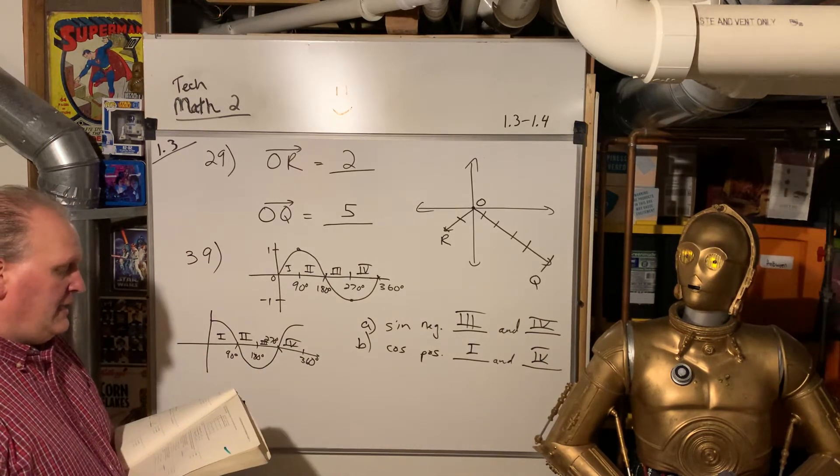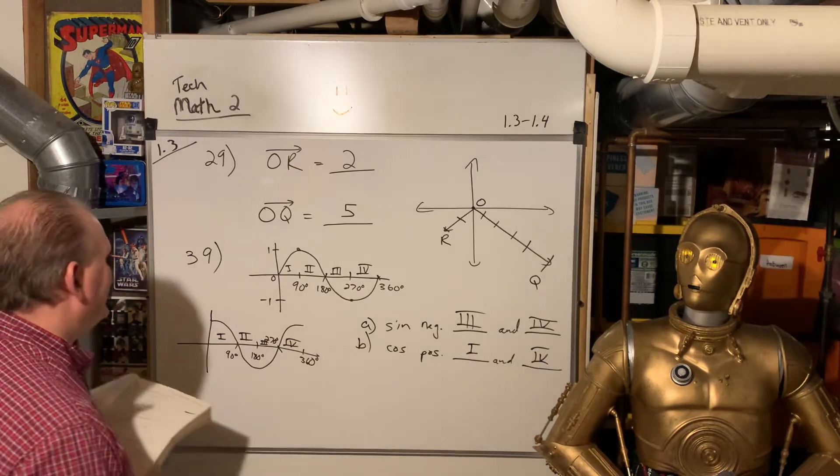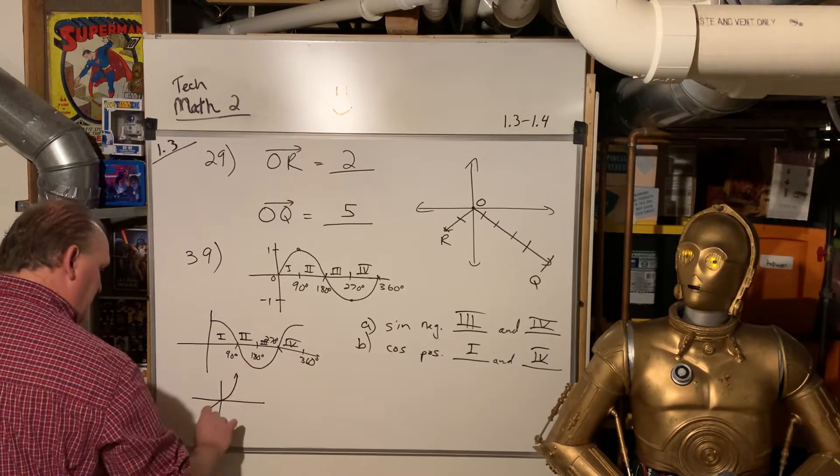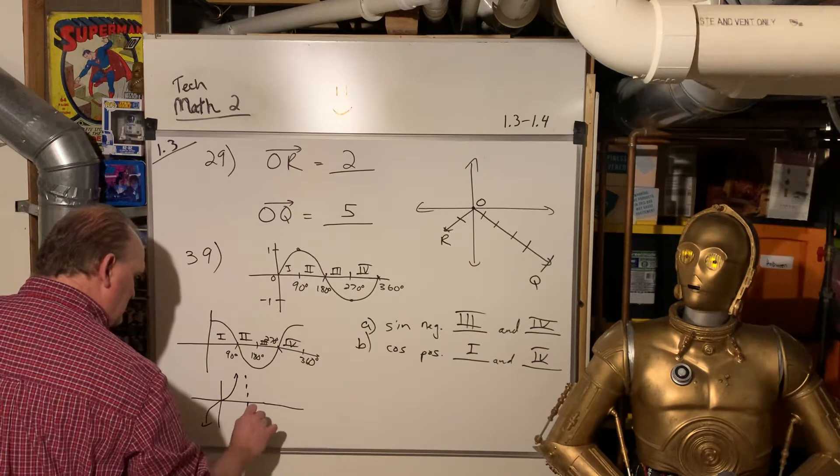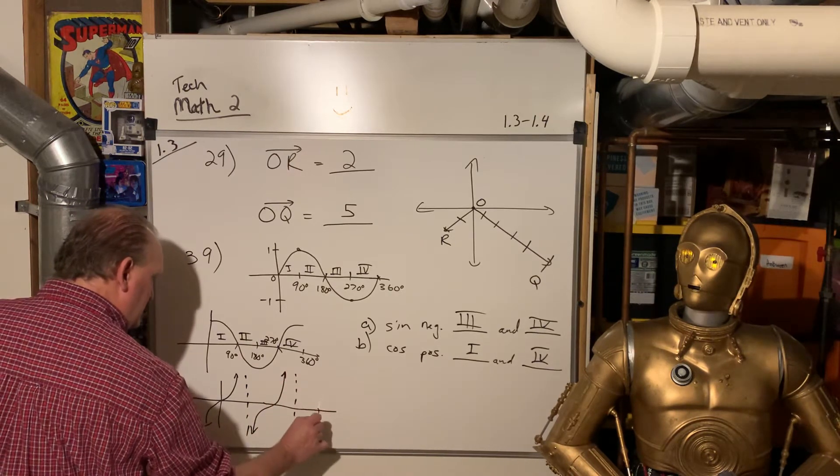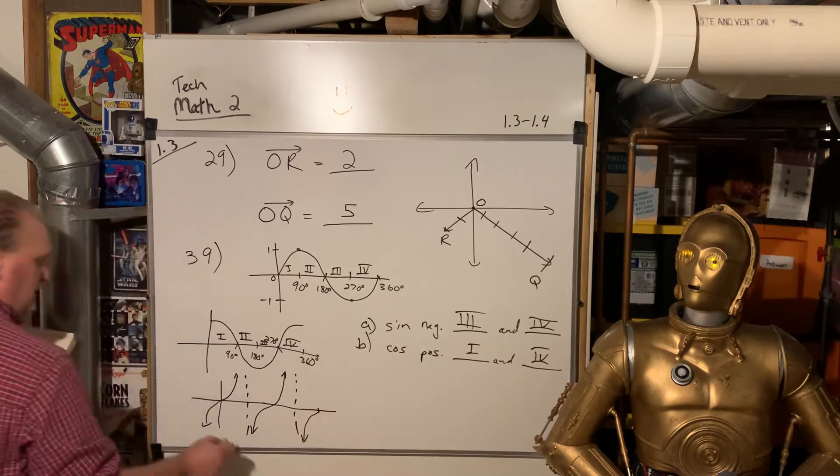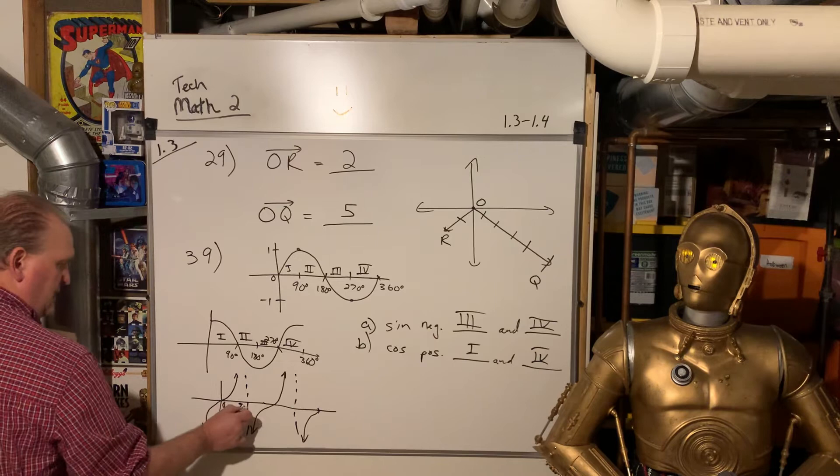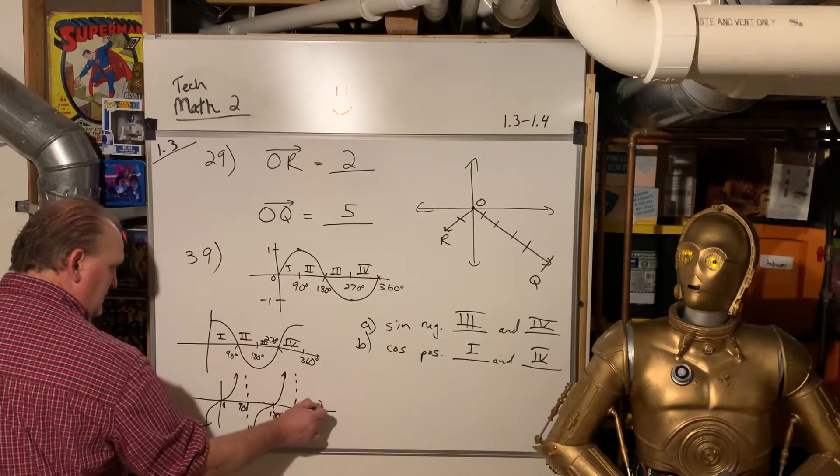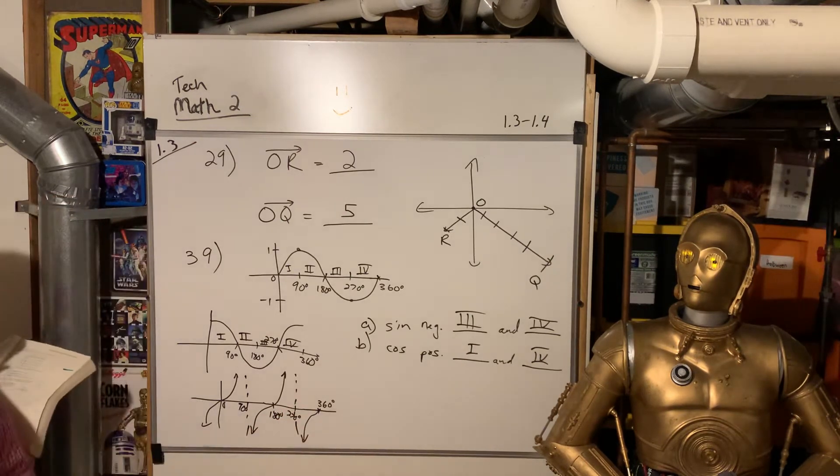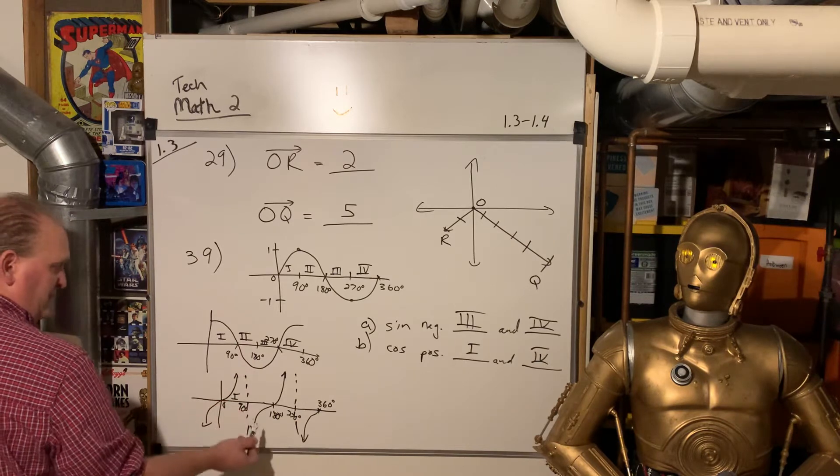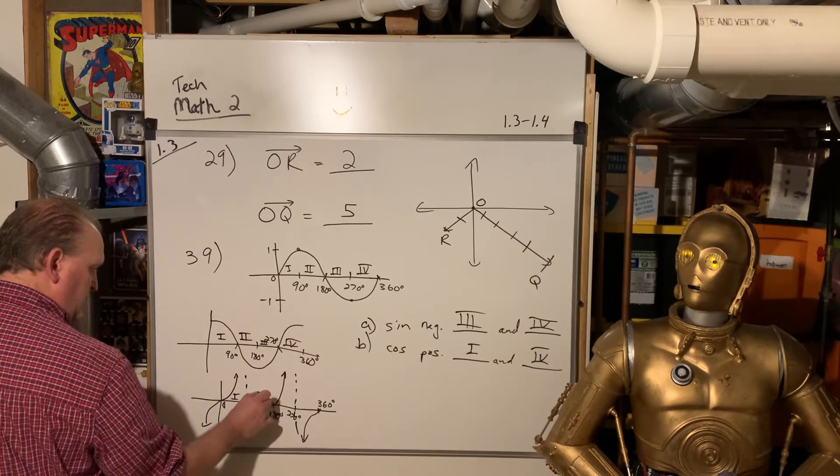And then tangent is a little harder to draw because you've got these asymptotes occurring every 180 degrees. So this is 0 degrees. This is 90 degrees. This is 180. This is 270. And this is 360. So when we look at tangent here, this is quadrant 1. So that's positive for tangent.